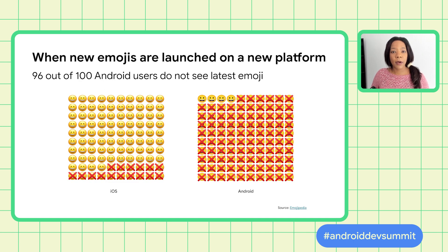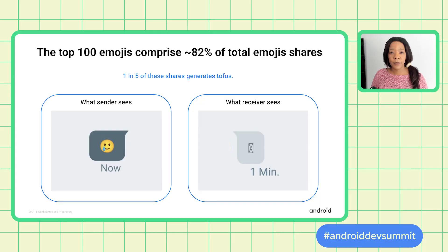One of the specific problems we're facing is that when a new Unicode emoji is launched, 96% of Android users do not get to see the latest emojis. This is significantly higher than iOS users, where only 16% of users don't see the latest emoji. Another interesting data point is that the top 100 emojis represent about 82% of all emojis shared between users. Unfortunately, about 20% of the time when a user sends an emoji, the receiver sees a tofu — a broken image — rather than the actual emoji the sender intended.